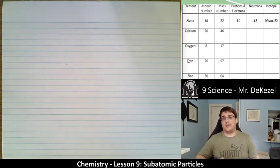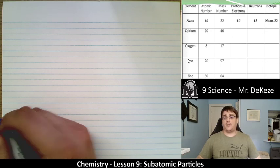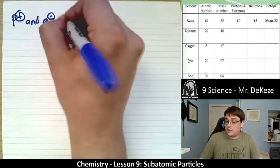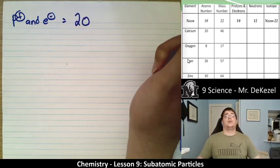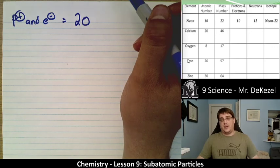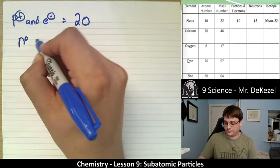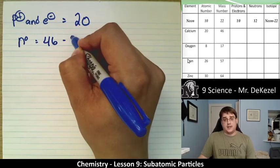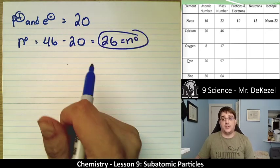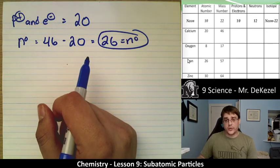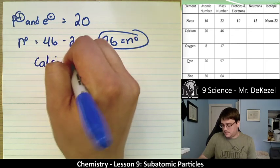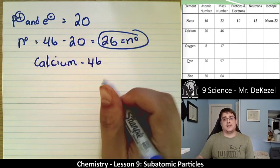Calcium has atomic number 20, so protons and electrons both equal 20. It has a mass number of 46. For neutrons: 46 minus 20 equals 26 neutrons. We write this as the isotope Calcium-46.